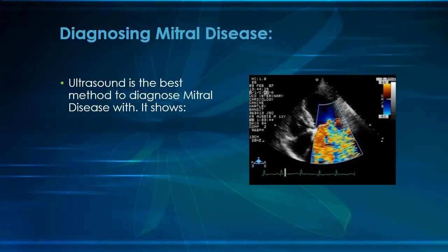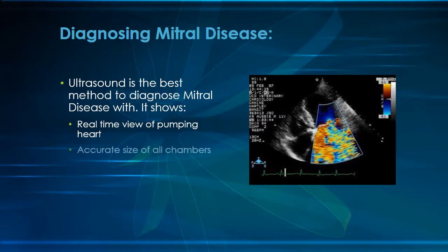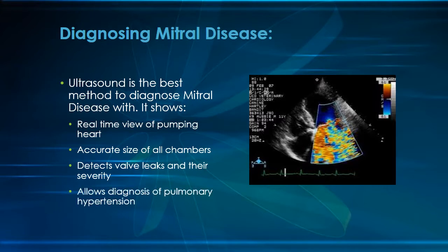Diagnostic ultrasound is the most effective tool for diagnosing mitral insufficiency. The ultrasound allows us to see the beating heart in real time. With it, we can measure the size of the chambers, the thickness of the walls, as well as the pressures being developed in the heart and great vessels. This ultrasound image uses color flow Doppler to show the presence of mitral regurgitation. The mottled color on the screen depicts turbulent blood flowing the wrong direction into the left atrium, which is typical in mitral insufficiency.